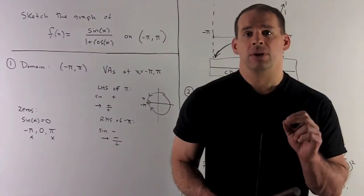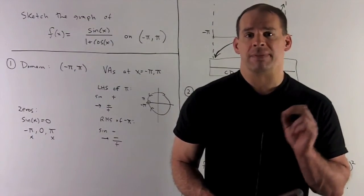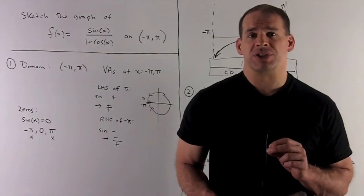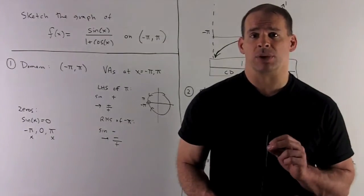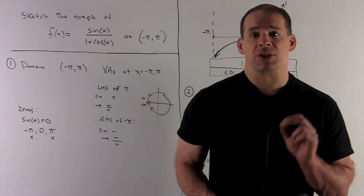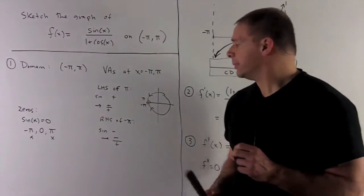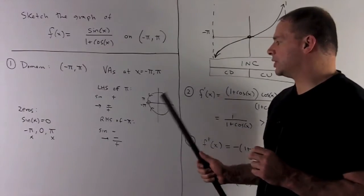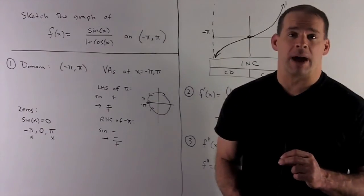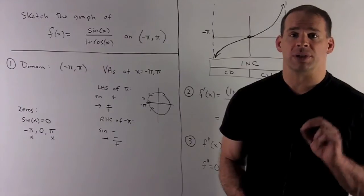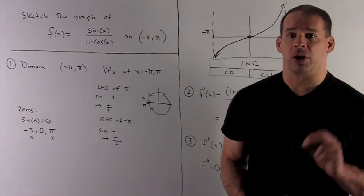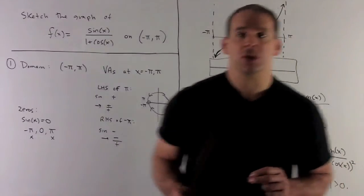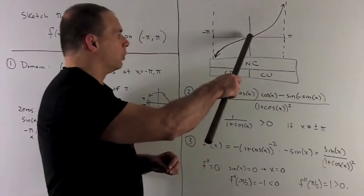Now let's look for zeros. The function equals zero only when the numerator is zero, i.e., when sin(x) = 0. Sine is the y-value on the unit circle, so that's zero at x = 0, or at plus and minus pi. We're throwing out minus pi and pi — they're the vertical asymptotes — so the only zero is at x = 0. We plot that point.